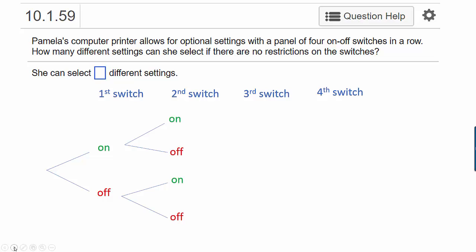But the same thing goes for the third switch. If the first and second switches are on, the third switch can be on or off. If the first and second switches are on and off respectively, still the third switch can be on or off. In fact, no matter how the first and second switch turned out, the third switch can be either on or off. It doubles the number of possibilities we had when we finished with the second switch.